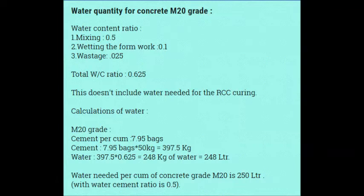उसके लिए पानी कैसे निकालेंगे: 397.5 multiplied by 0.625 = 248 kg पानी। 1 kg पानी का volume है 1 liter, इसलिए volume आया 248 liters। सारांश यह है कि 1 cubic meter M20 concrete site पे cast करने के लिए करीब 250 liter पानी चाहिए। अगर 10 cubic meter का concreting करना है तो 2500 liter पानी की आवश्यकता है। अभी आप check कर लीजिए आपके site पे storage कितना है — अगर कम है तो उतना पानी add कर लीजिए। पानी होना जरूरी है casting के समय पे।